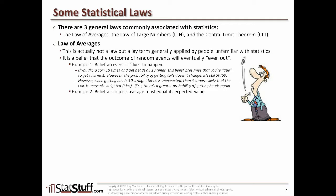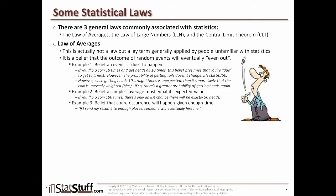Another example is the belief that a sample's average must equal its expected value. But if you flip a coin 100 times, there's only an 8% chance you'll get exactly 50 heads. A third example is the belief that a rare occurrence will happen if you give it enough time — for instance, the statement that if you send your resume to enough places, someone will eventually hire you. That may be true if assuming a non-zero probability and a large enough number of trials, but in that case, what we're calling the law of averages is actually just the law of large numbers.